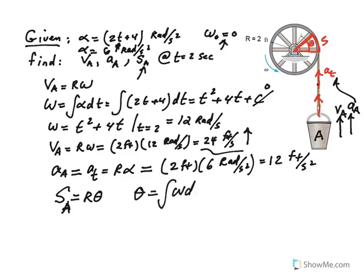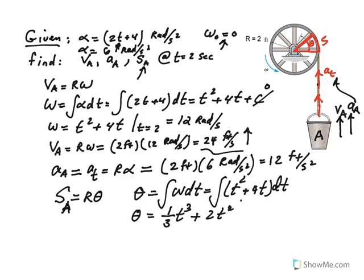So what is theta? Theta would be the integral of omega. Go ahead and integrate omega: t squared plus 4t. So theta becomes one-third t cubed plus 2t squared. Plug in t equals 2 seconds, and we get 8/3 plus another 8, so 10.67 radians.